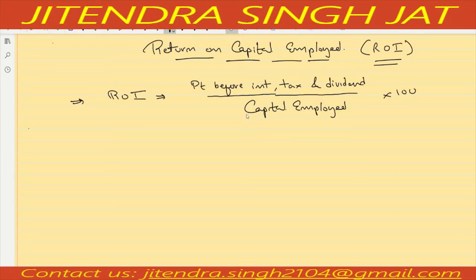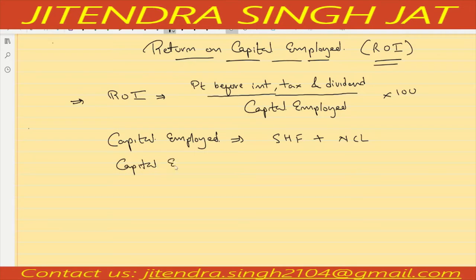Lesser the ratio means the company has to take some very important steps to improve the functioning. To calculate capital employed if it is not given directly, there are two formulas. One is: shareholder fund plus non-current liability — this is the liability approach. The other approach uses total assets minus current liability, since total assets always equal total liability.